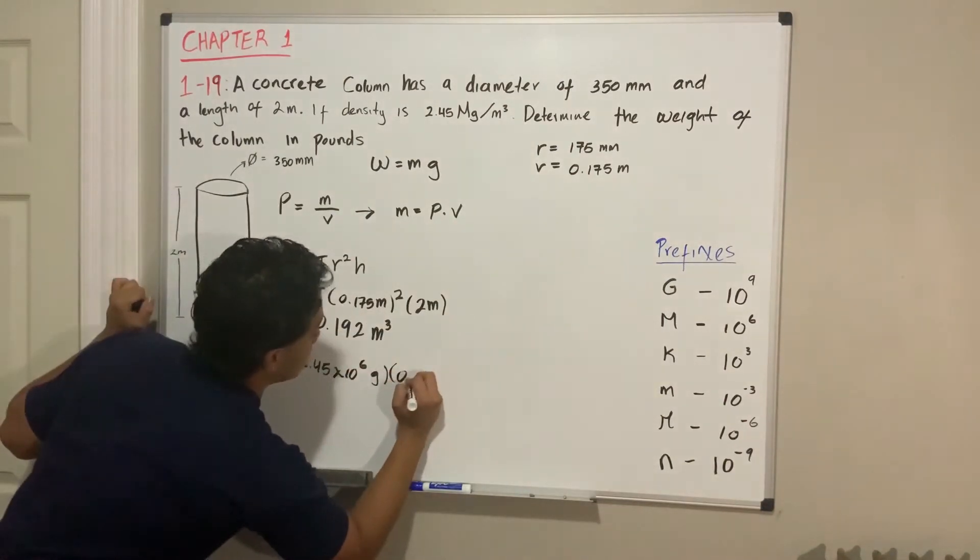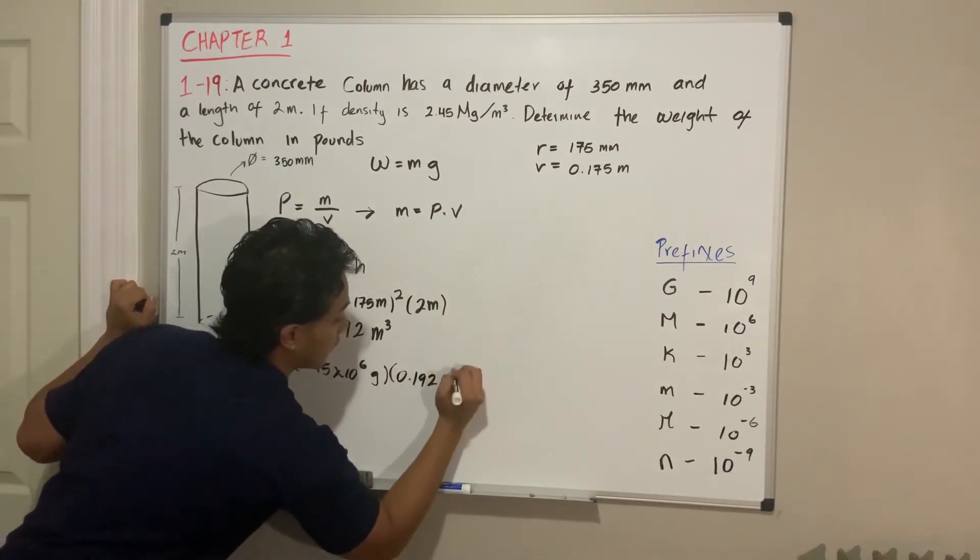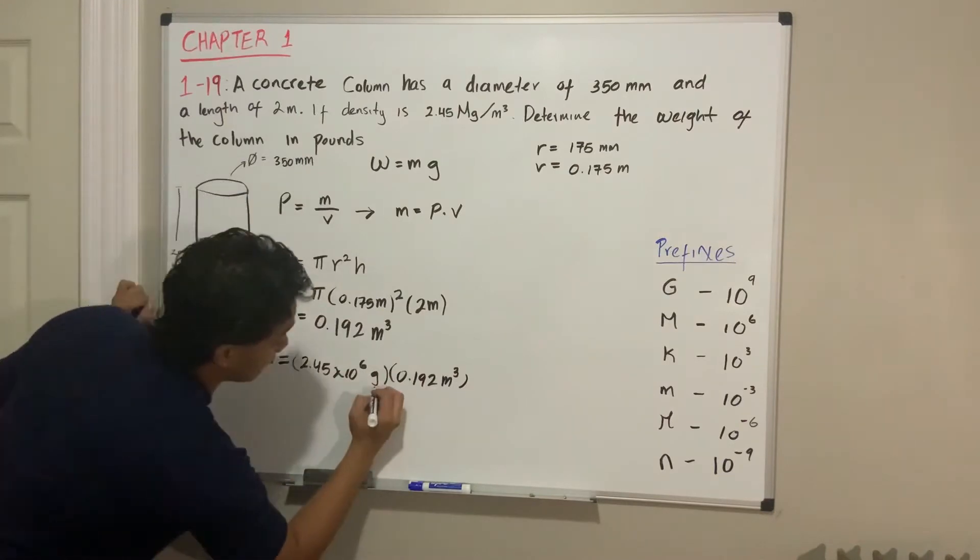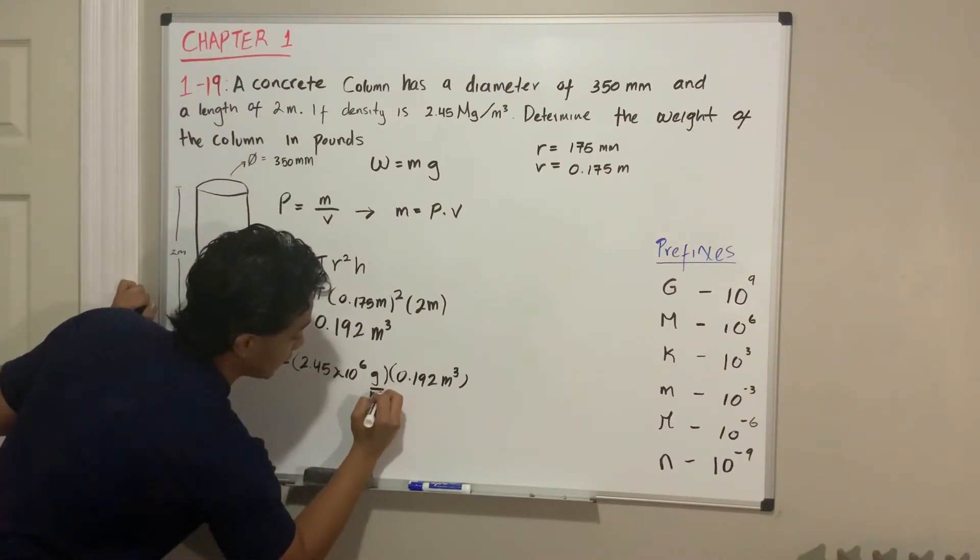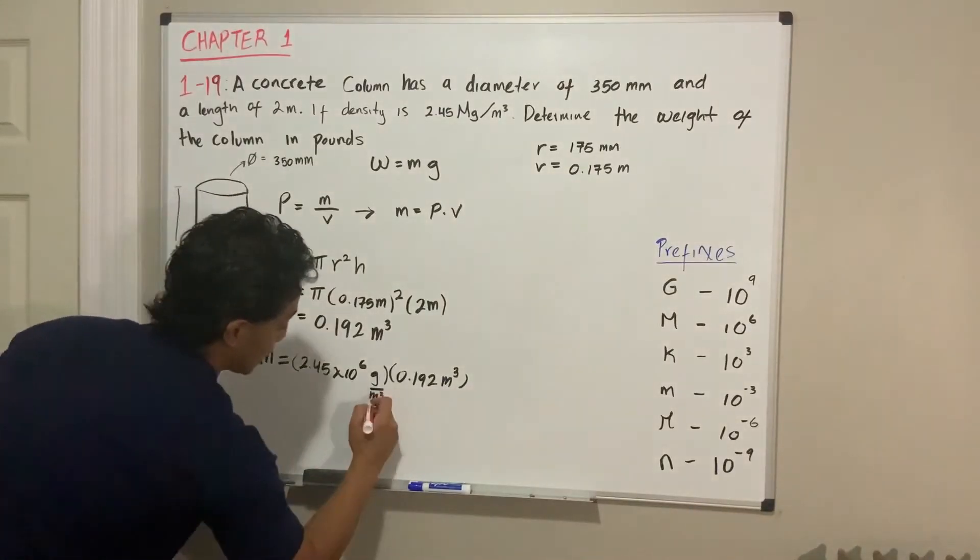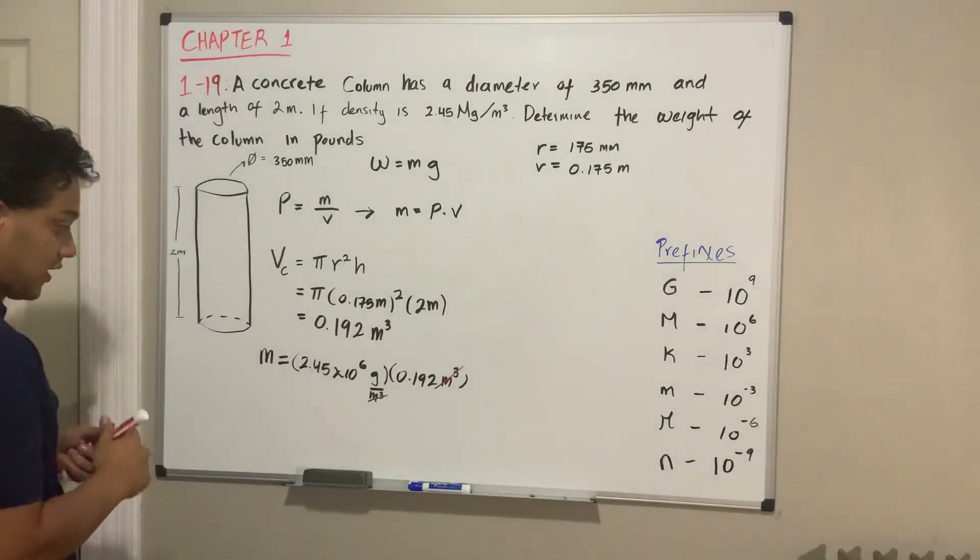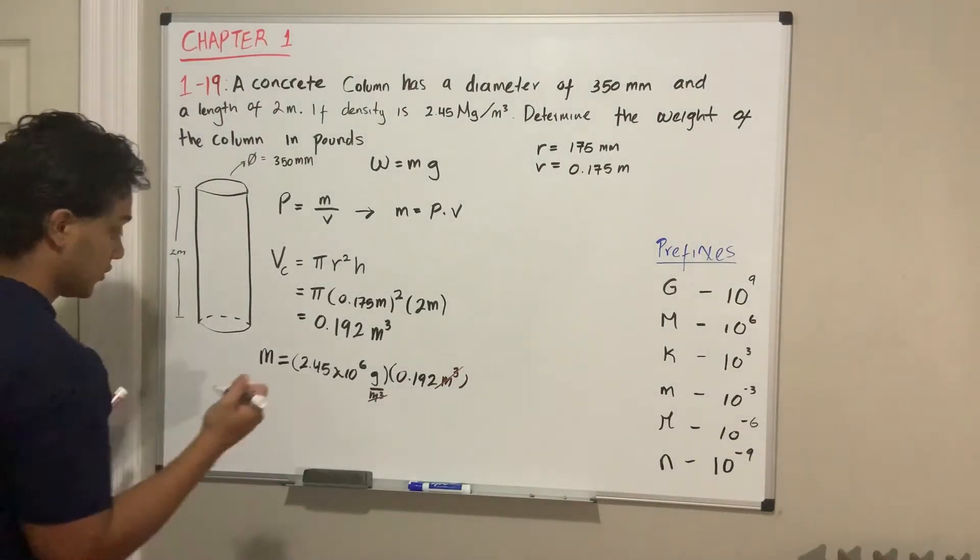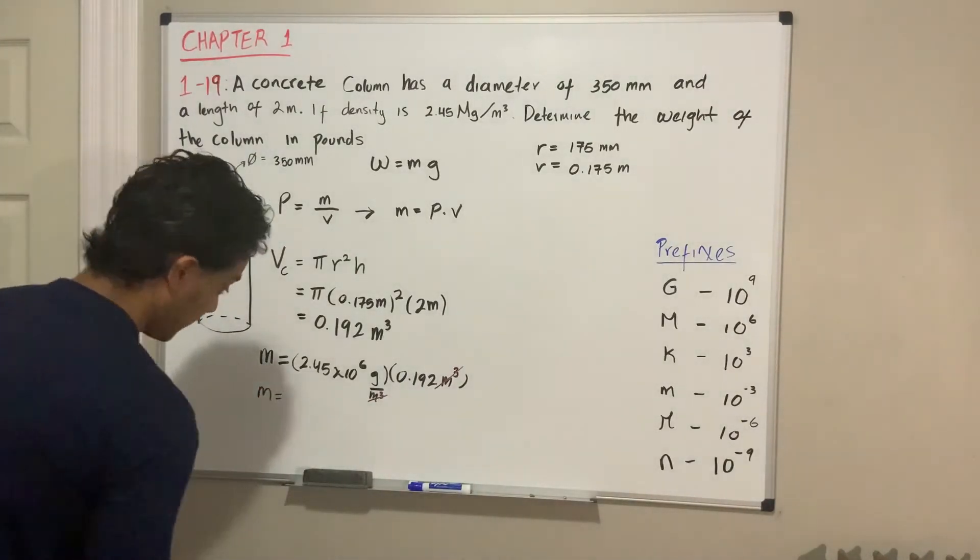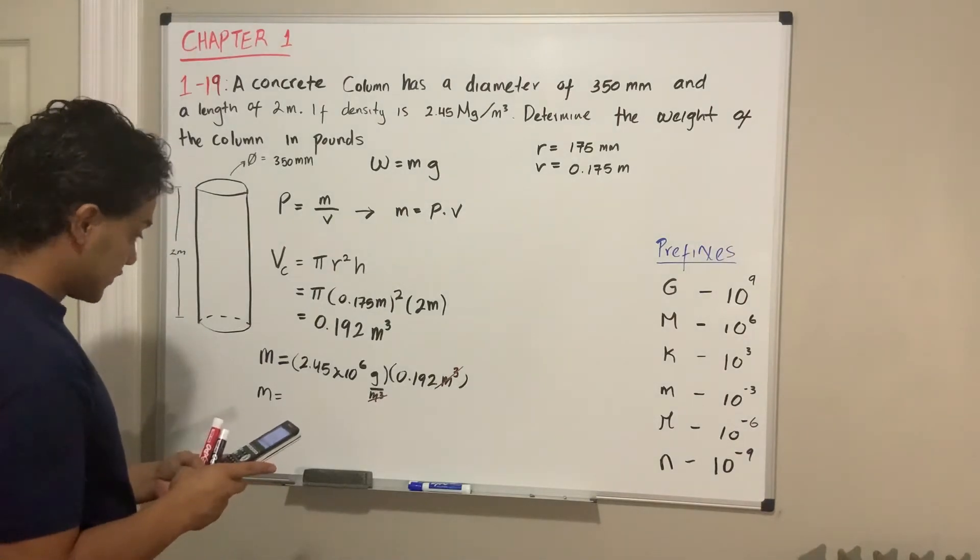We need to multiply density times volume. Our volume is 0.192 cubic meters. When I multiply these, the cubic meters cancel each other and I'm left with grams, which is a unit of mass.